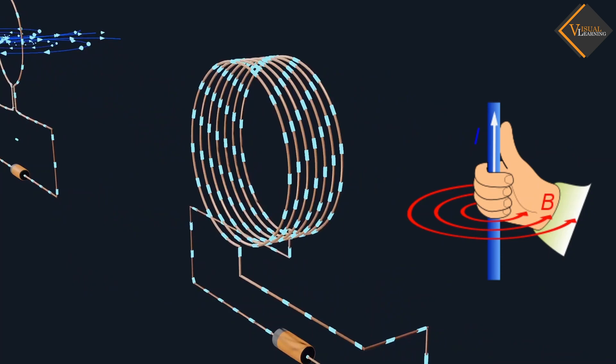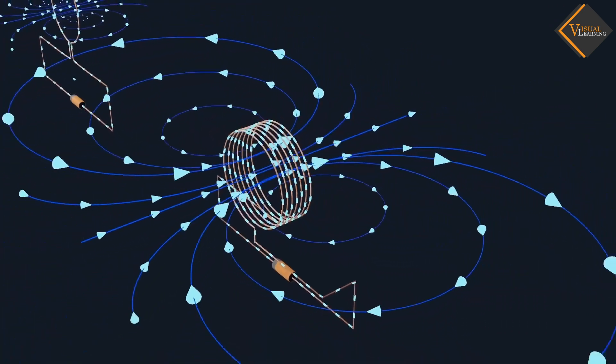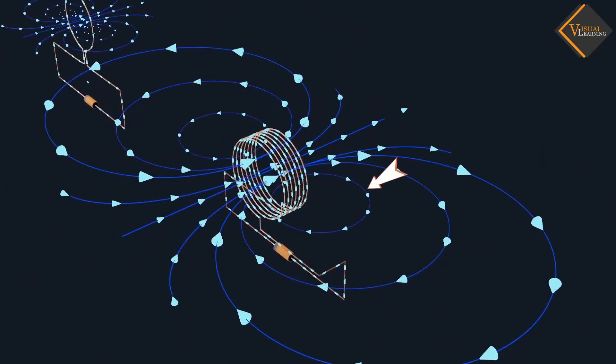By applying the right hand thumb rule, it is easy to check that every section of the wire contributes to the magnetic field lines in the same direction within the loop.